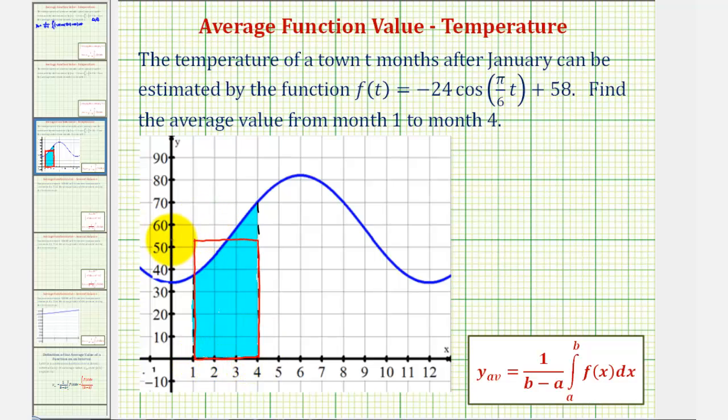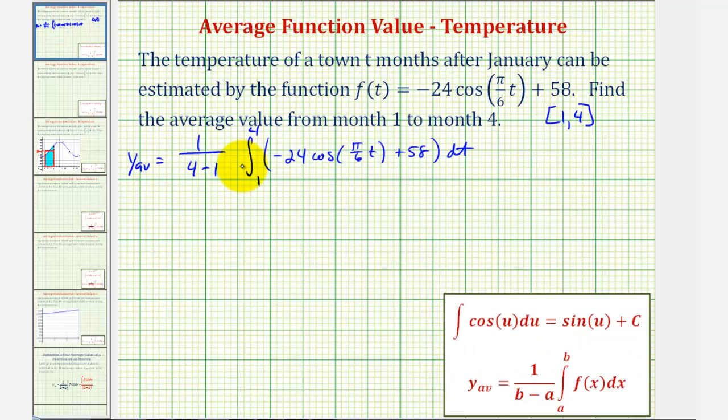This y value here, this function value, would be the average value. So now going back to our definite integral, let's evaluate this. We'd have one-third times, now we'll find the antiderivative here.